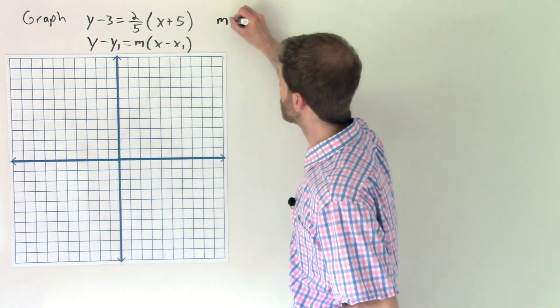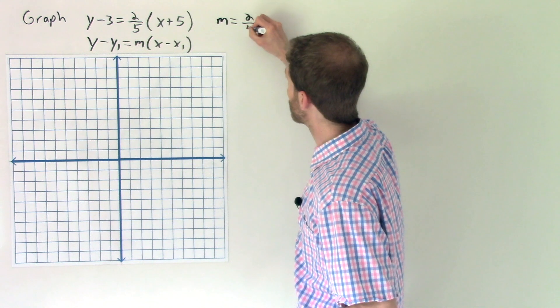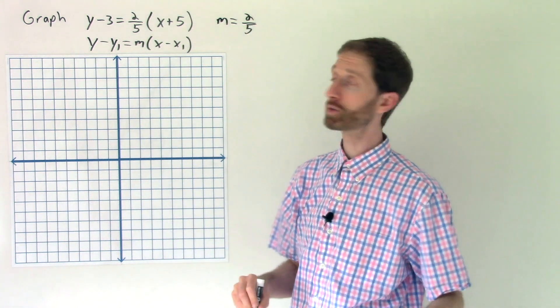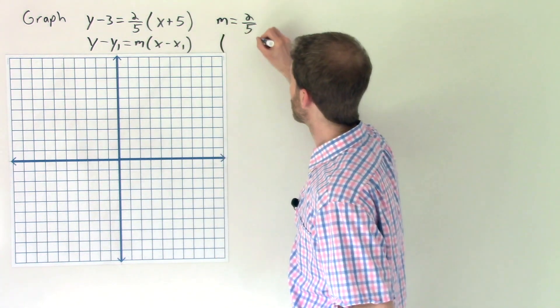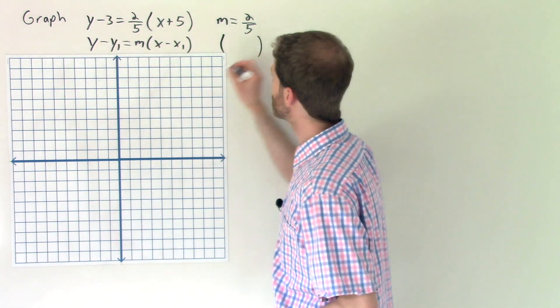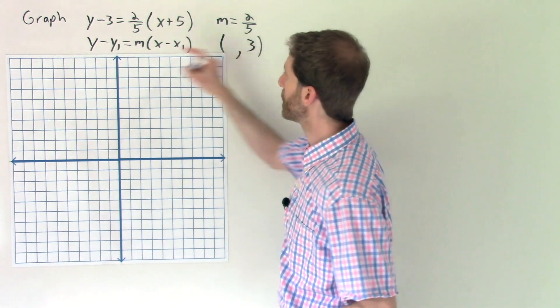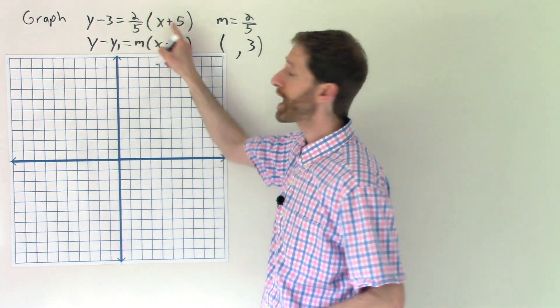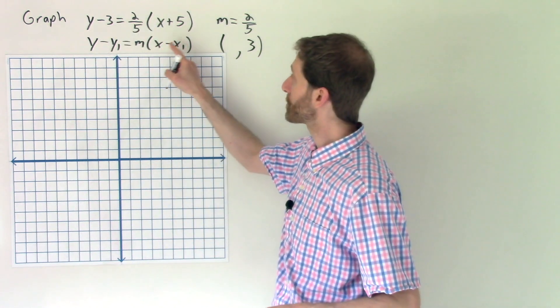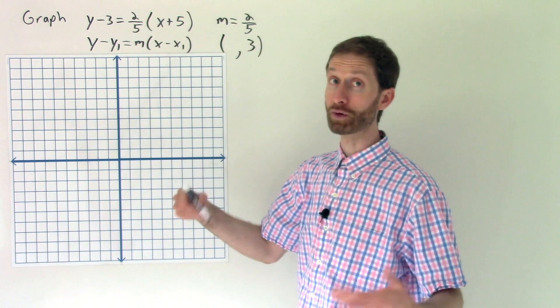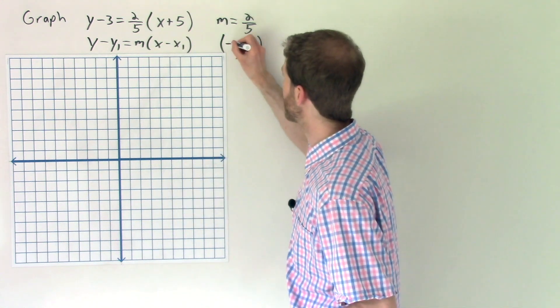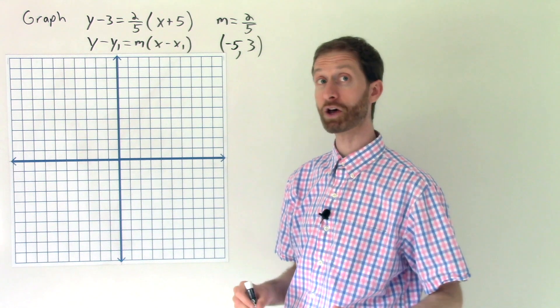So now from here, what I do is I take an inventory of what I have. My slope, not so bad, is 2 fifths. So we're going to rise 2 and run 5. Sweet. My point, well, let's check it out. I've got y minus 3. So that's going to be a y value of 3 minus y₁. And then x plus 5. So x minus a negative 5 would give us x plus 5. So it's negative 5. And so now we have a point and a slope.